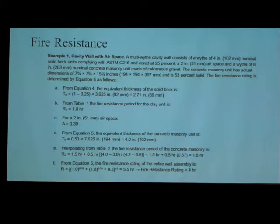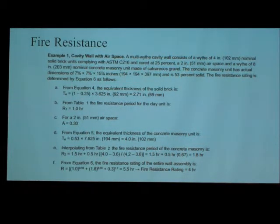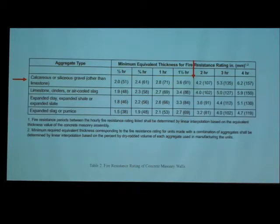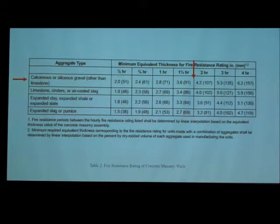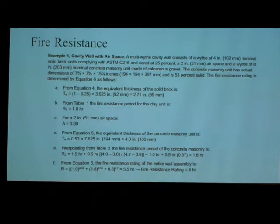The air space is equal to 4.3. From division 5, the equivalent thickness is equal to the percent solid, which is 53 percent, multiplied by 7.625, giving 4 inches. From table 2, we calculate the fire resistance period of the concrete masonry: the concrete masonry unit is made of gravel aggregate with an equivalent thickness of 4 inches, so we do interpolation and get 1.8 hours for the fire resistance period. Then we calculate the total period of fire resistance and get 5 hours, or 4 hours maximum.